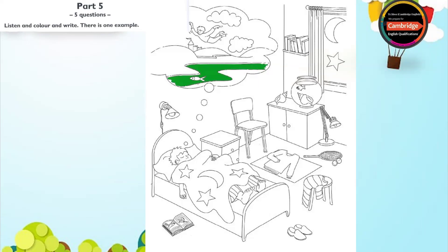5. Now find the shell. Which one? There are two in this picture. Colour the shell that's in the bowl. Make it blue. Alright. I'm tired now too. Well, that's the end.